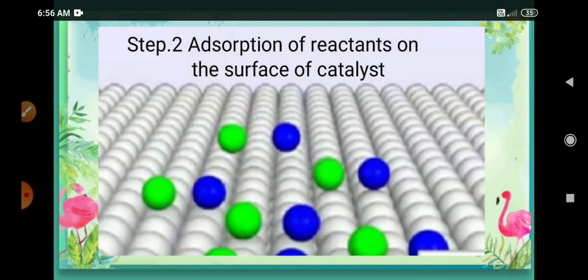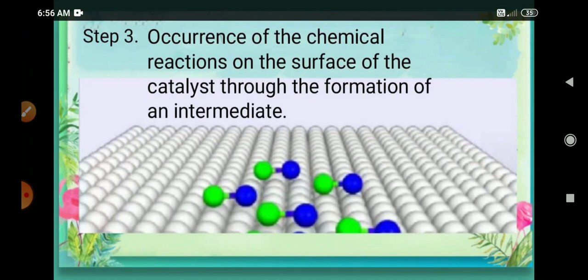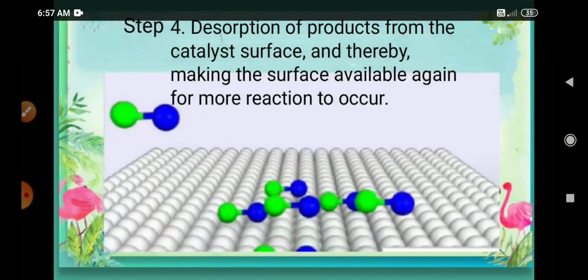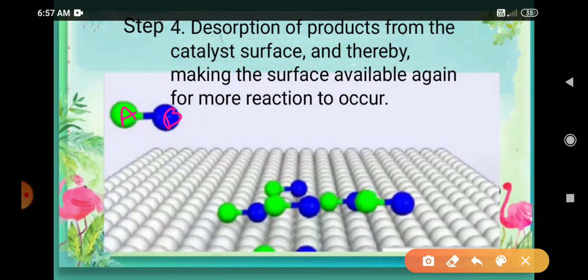In the second step, when the reactants diffuse to the surface, they get adsorbed — the particles are now adsorbed on the surface of the catalyst. In the third step, a chemical reaction occurs on the surface of the catalyst through the formation of an intermediate. So first diffusion, then adsorption, then intermediate formation — all taking place on the surface of the catalyst. After intermediate formation, a product forms with a permanent bond.